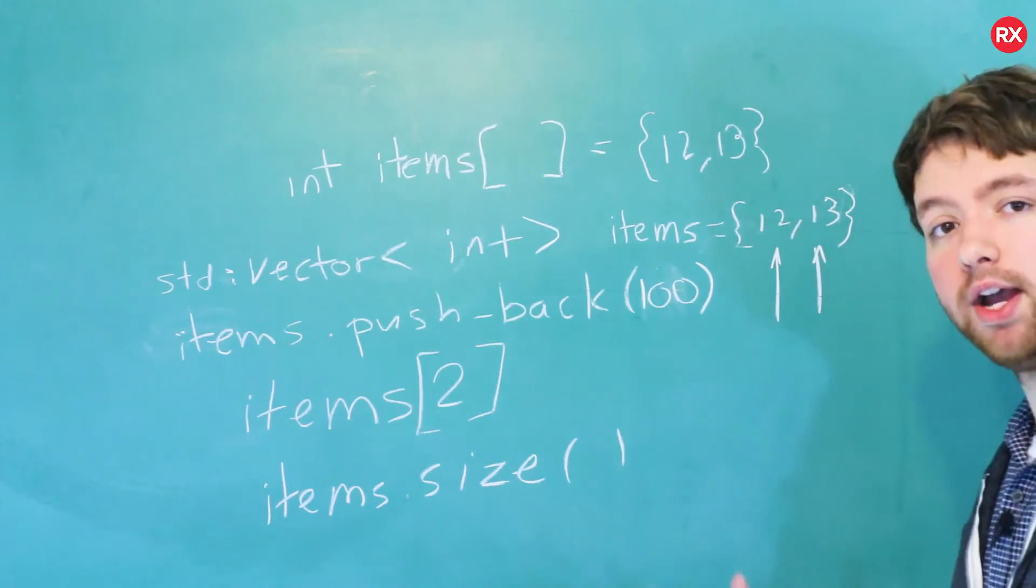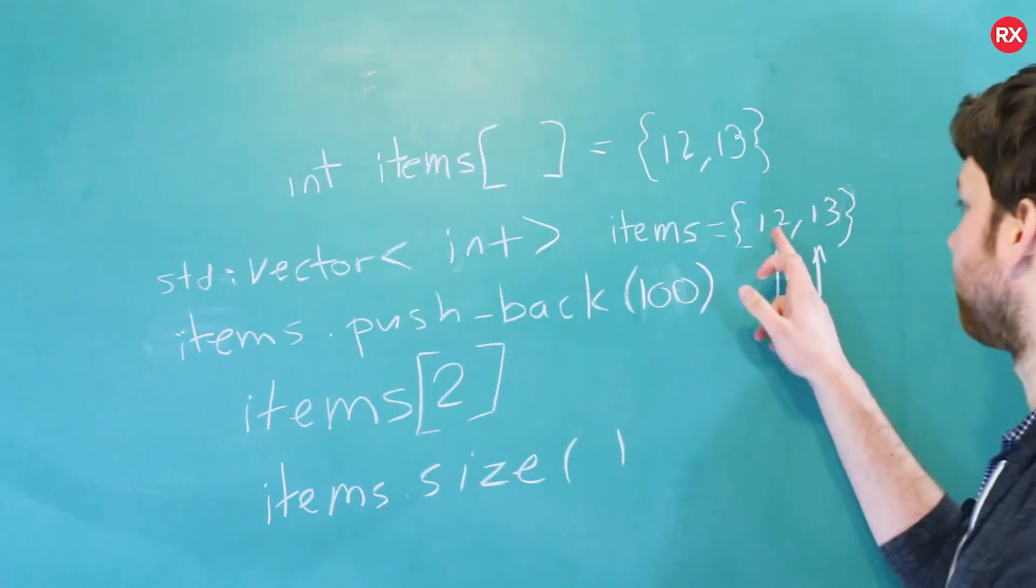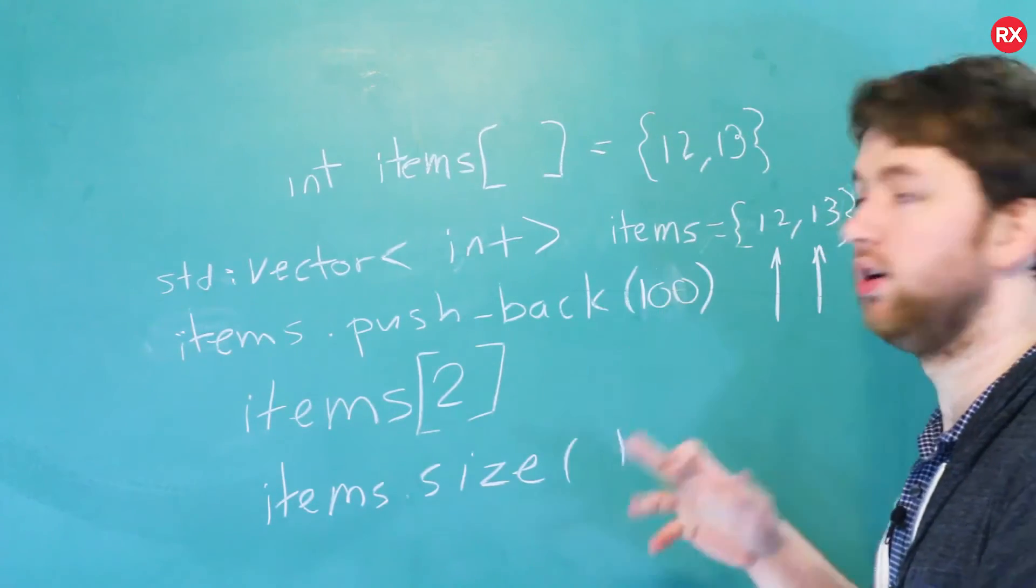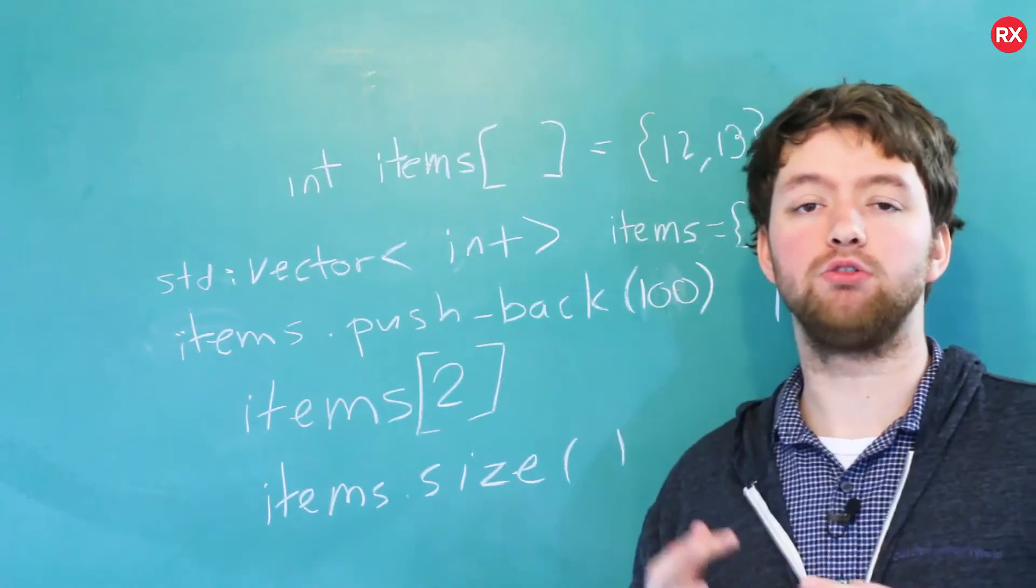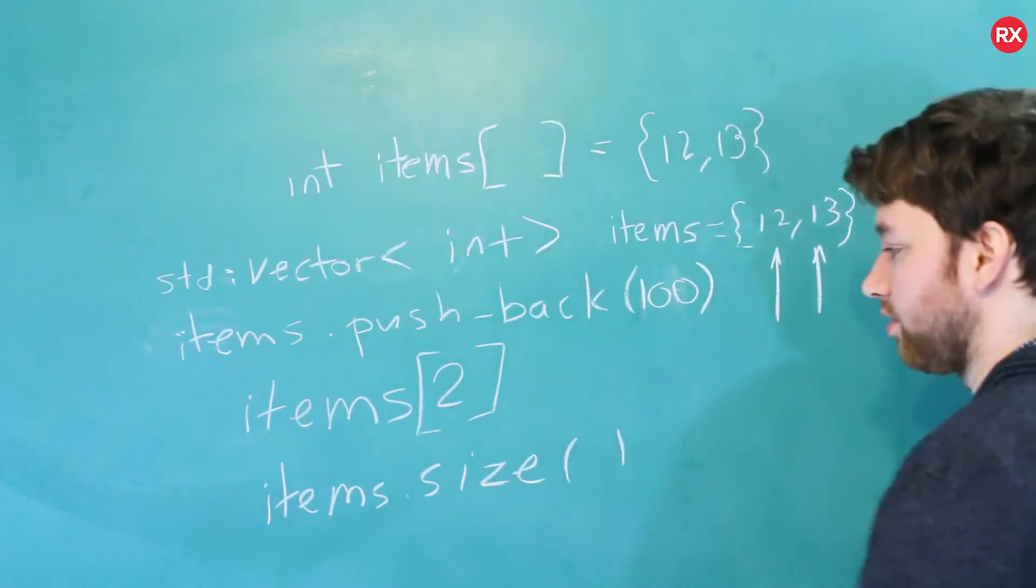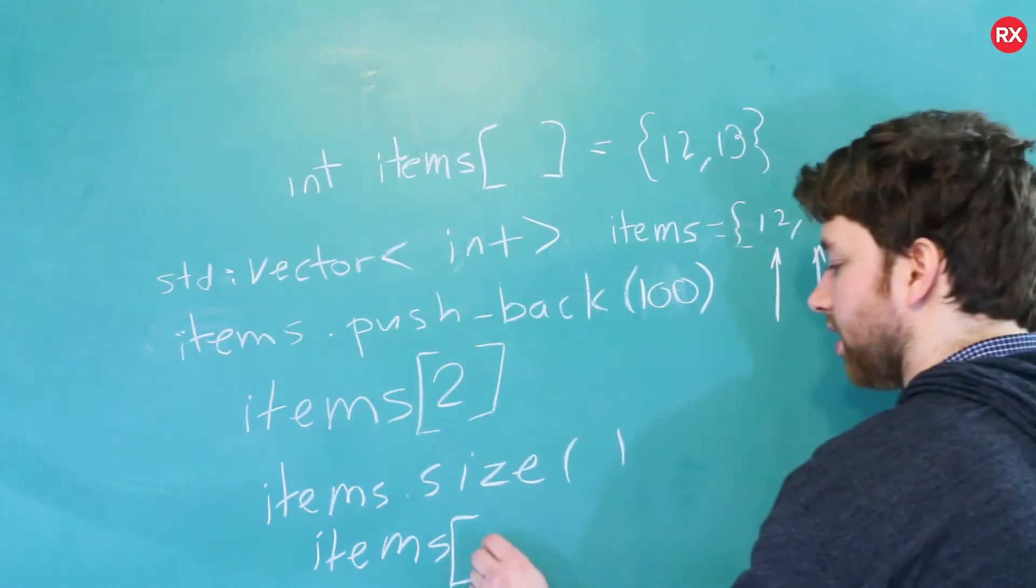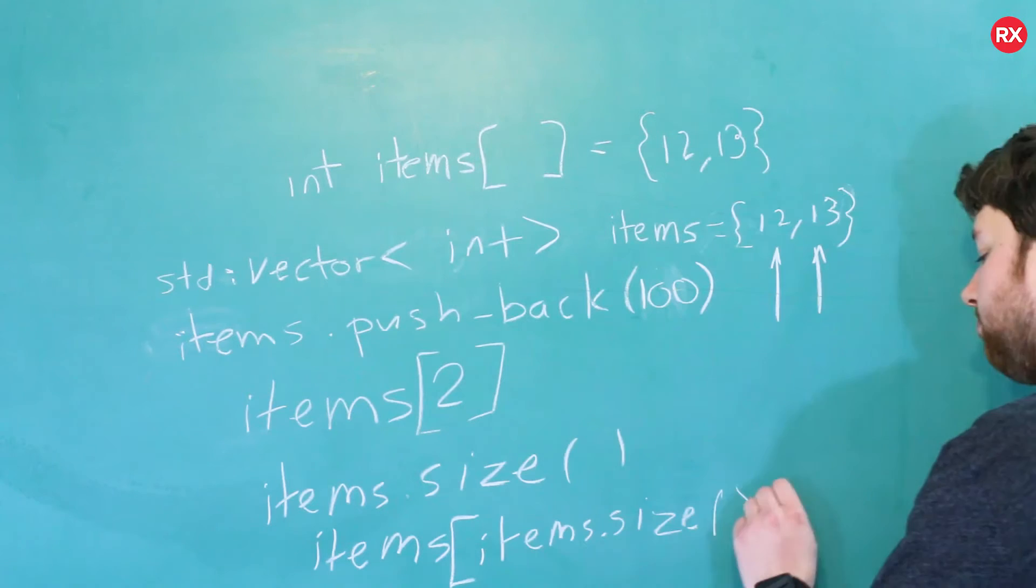1, 2, 3. Keep in mind, the indexes are always shifted 1 over. So the indexes are 0, 1, and 2. Whereas the size is 1, 2, 3. So if you want to grab the last element of the vector, what you can do is you could actually say items, and then for the index to pass, what you can do is say items dot size minus 1.